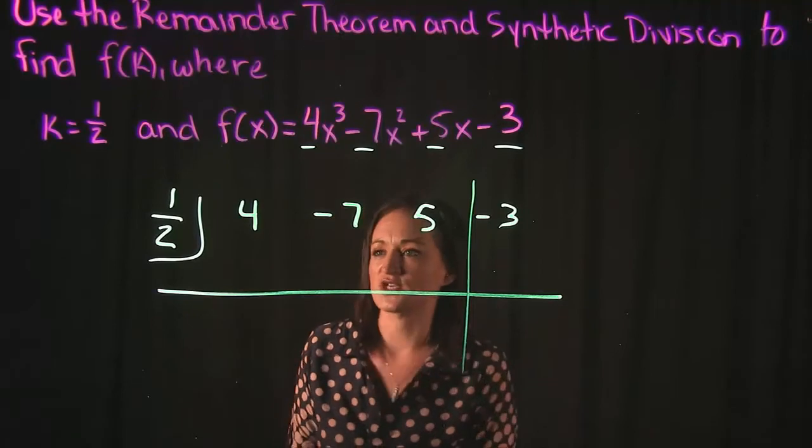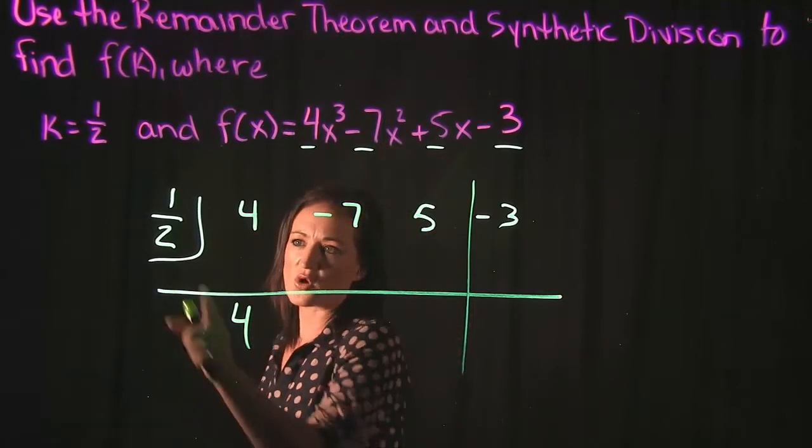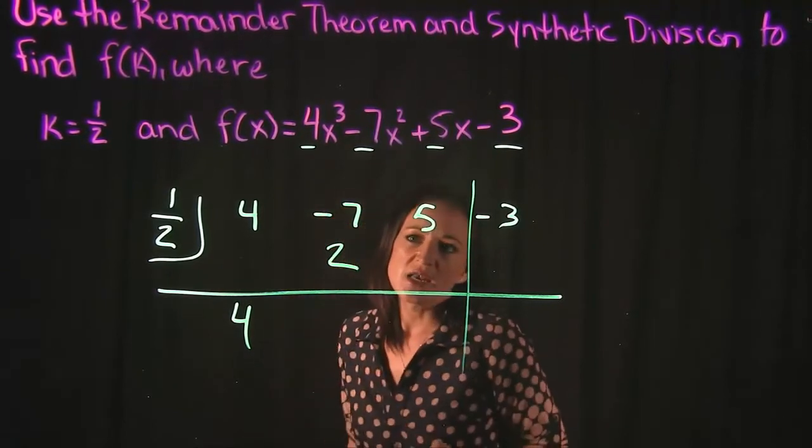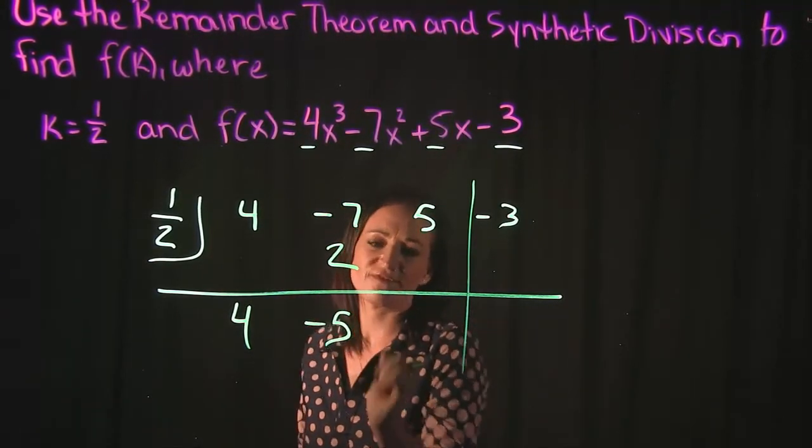So let's go ahead and do synthetic division here. So dropping down 4. We do 4 times 1 half. 4 times a half is 2. Negative 7 plus 2 gives us a negative 5.